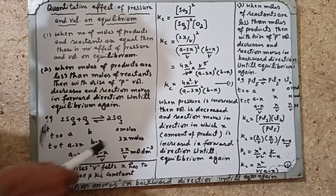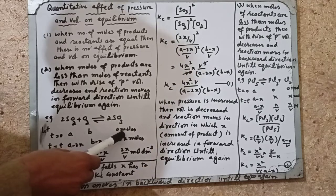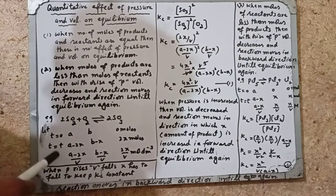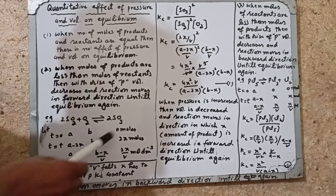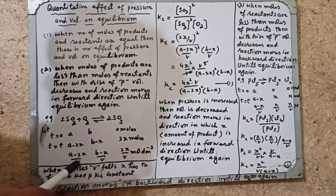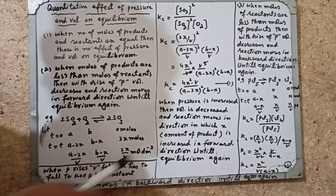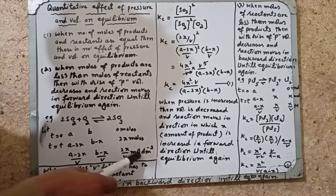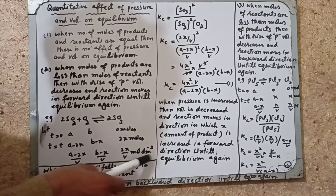2SO₂ + O₂ ⇌ 2SO₃۔ SO₂ کے A moles ہیں، O₂ کے B moles ہیں، اور SO₃ ابھی 0 moles ہیں۔ After time T، SO₂ کے A minus 2X moles رہ جائیں گے، O₂ کے B minus X مول رہ جائیں گے، اور SO₃ کے 2X moles بن جائیں گے۔ Molar concentration moles per cubic decimeter میں show کرنے کے لیے total volume V پر divide کریں گے، تو concentrations ہوں گی: A minus 2X over V، B minus X over V، اور 2X over V۔